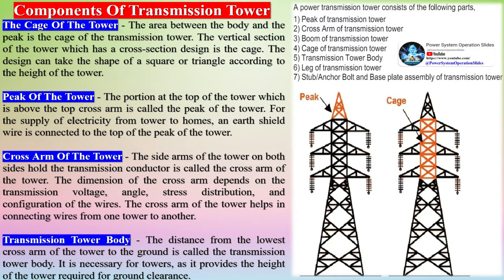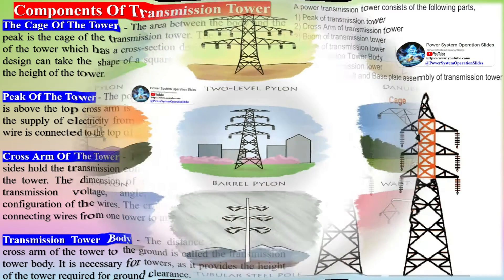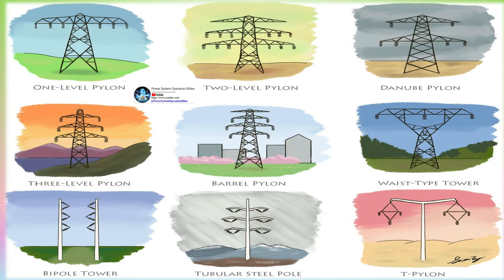The components of a transmission tower include: the cage of the tower, which is the area between the body and the peak; the peak of the tower, which is the portion at the top above the top crossarm; and the crossarm of the tower, which refers to the side arms on both sides that hold the transmission conductor.